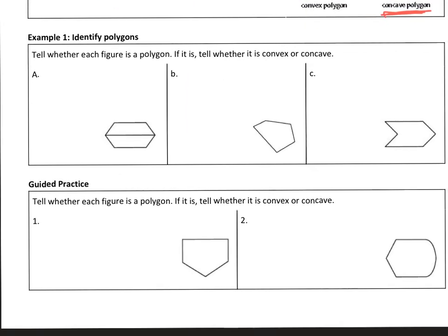In example one, right off the bat we're telling whether it's a polygon and if it is, we're telling whether it's convex or concave. So in part A right here, this is not a polygon. And the reason it's not a polygon is because this side right here intersects and hits one, two, three sides. We said a side has to intersect with only two other sides. That is why that is not a polygon.